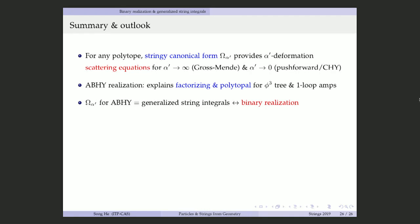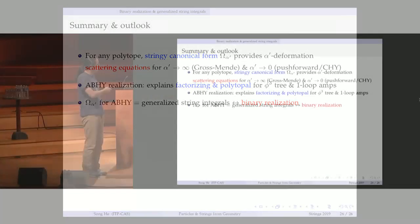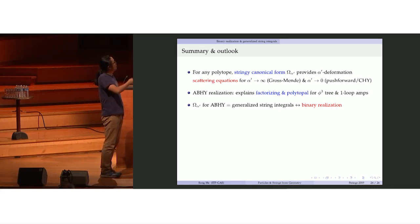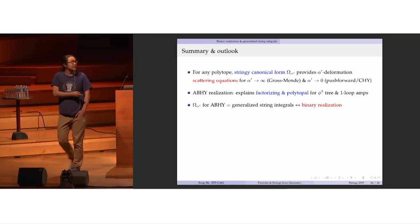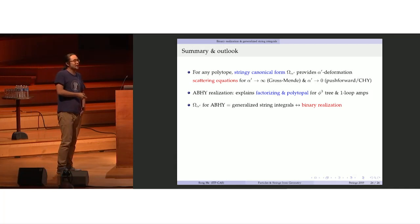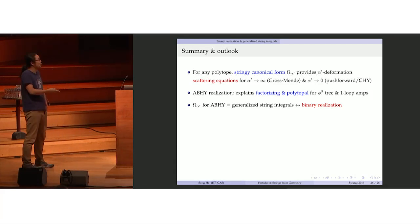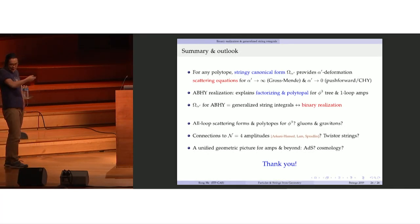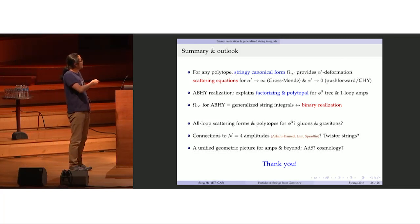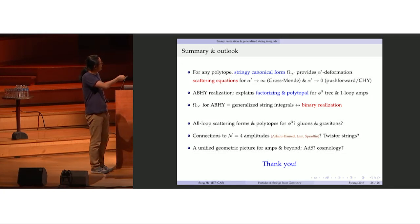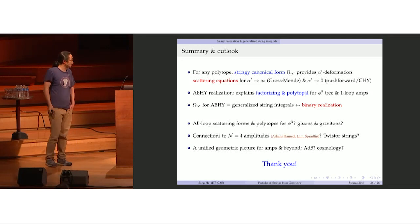In conclusion, for any polytope there is an alpha-prime deformation — the stringy canonical form — which recovers the canonical form as alpha-prime goes to zero. Scattering equations play an important role both in the alpha-prime to zero and to infinity limits. Our favorite polytopes are the ABHY realizations of cluster polytopes, which explain factorization and why amplitudes are polytopes for phi-cube at tree and loop level. Taking their stringy canonical forms gives generalized string integrals tied to the binary u-space realization and generalized world sheets. Open questions include extending to all loops for phi-cube, incorporating gluons and gravitons, understanding connections to N=4 super Yang-Mills and twistor strings, and applying this geometry beyond flat space.